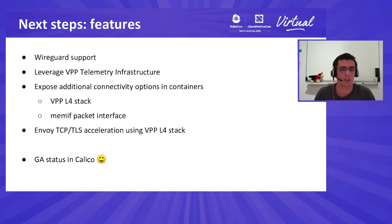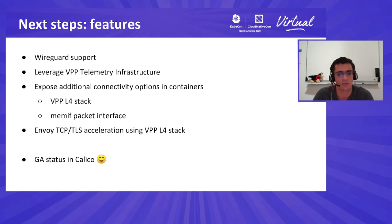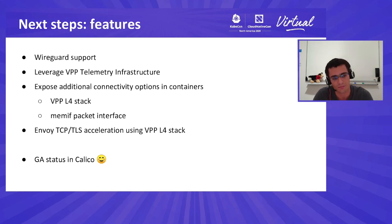In terms of future work, the first item is WireGuard support — we recently had a contribution for a WireGuard implementation in VPP, and integrating it into Calico VPP will improve compatibility with regular Calico nodes. We also want to leverage VPP's telemetry infrastructure to expose more metrics about what's happening in containers. We also want to explore bringing connectivity directly to containers via the VPP transport stack — though this requires application modification, Envoy is a key candidate that could benefit greatly. Finally, we want to graduate from incubation status to GA in Calico.